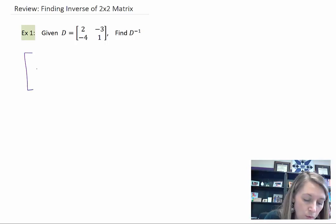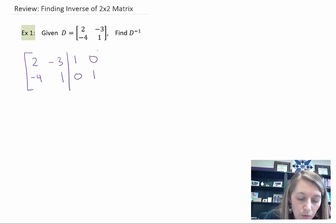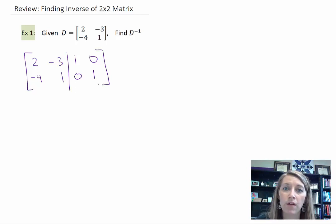To review, we take this 2 by 2 matrix. We partner it up with the identity matrix. We row reduce it and whatever we flip flop, whatever we get over here on the right, that's going to be our inverse matrix.